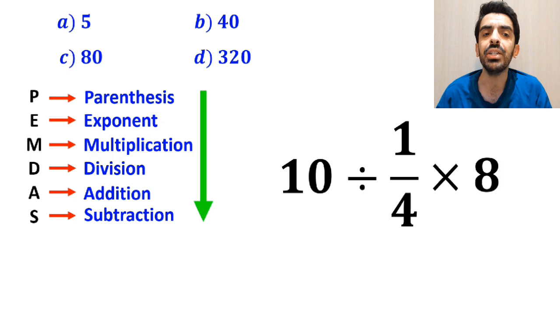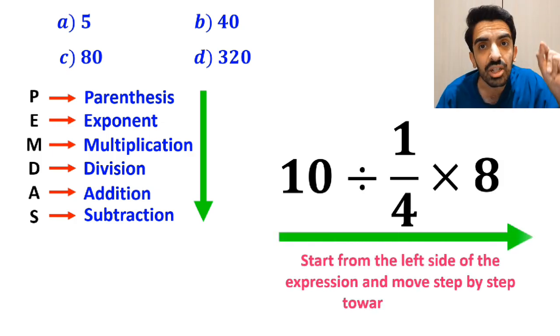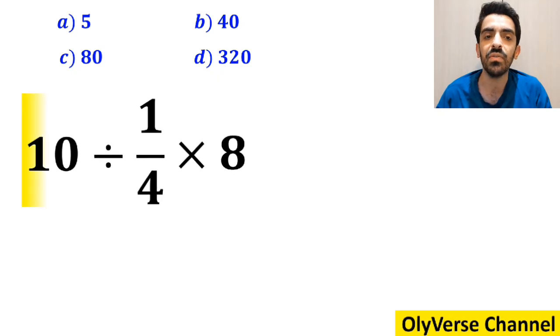In this case, the best thing to do is to start from the left side of the expression and move step by step toward the right. So, first we start with the expression 10 divided by 1 over 4.